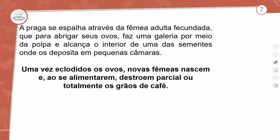A praga se espalha através da fêmea adulta fecundada, que, para abrigar seus ovos, faz uma galeria por meio da polpa e alcança o interior das sementes, onde deposita uma pequena quantidade. Uma vez eclodidos os ovos, novas fêmeas nascem e, ao se alimentarem, destroem parcialmente ou totalmente o grão de café.